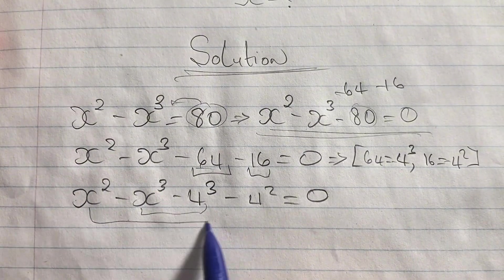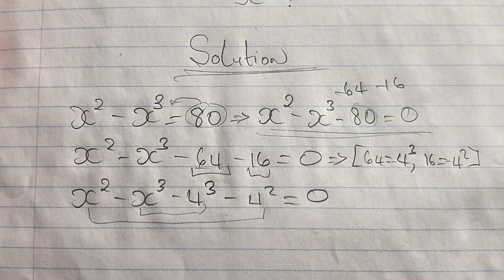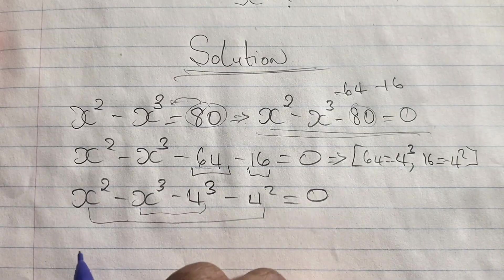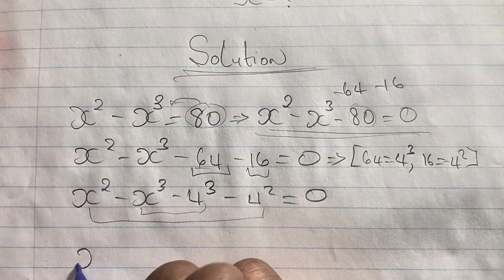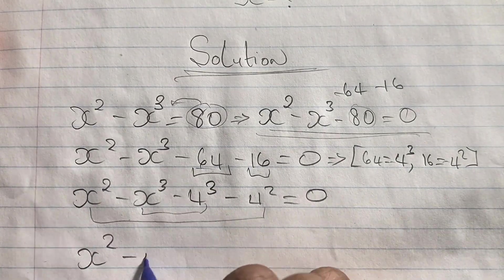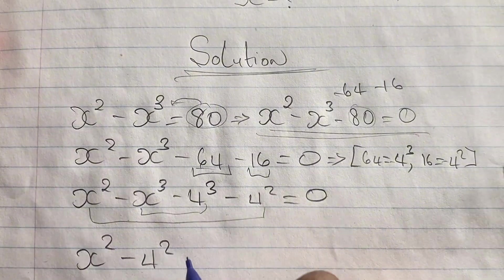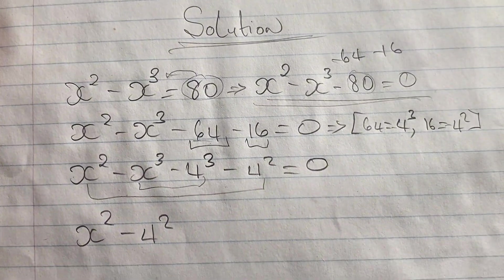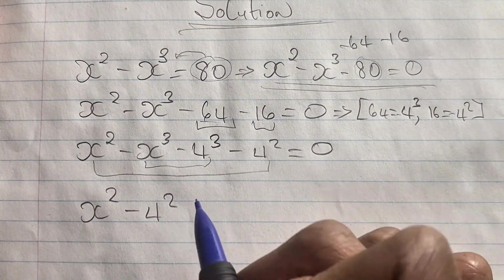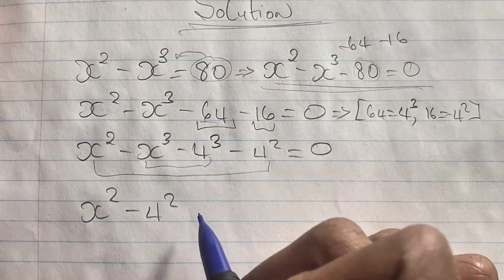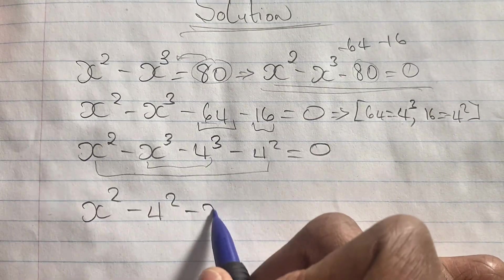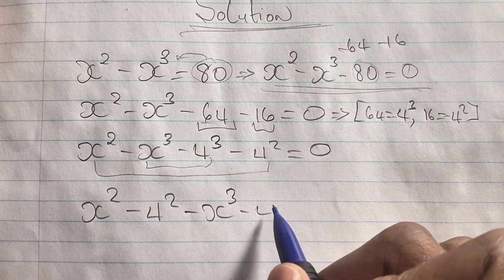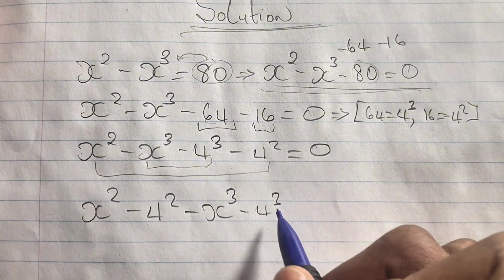We have a pair of squared terms and a pair of cubic terms, so we group like terms. Grouping the squared terms gives us x squared minus four squared, and grouping the cubic terms gives us minus x cubed minus four cubed, all equal to zero.